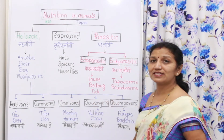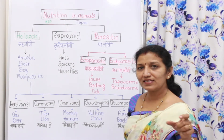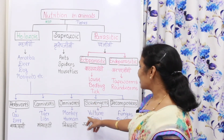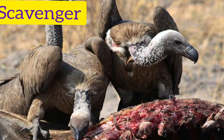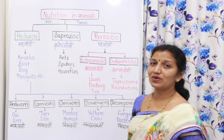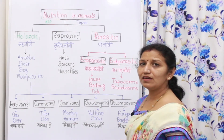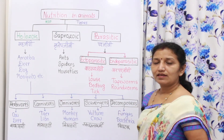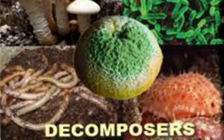Scavengers and decomposers are very important for the cleanliness of our surroundings. Scavengers depend on dead organisms for their survival — they are called svachhata karmi in Marathi. They take food from dead bodies of organisms. Decomposers also depend on dead bodies, but they decompose the organic material in those dead bodies to survive. Fungus and bacteria are examples of decomposers.